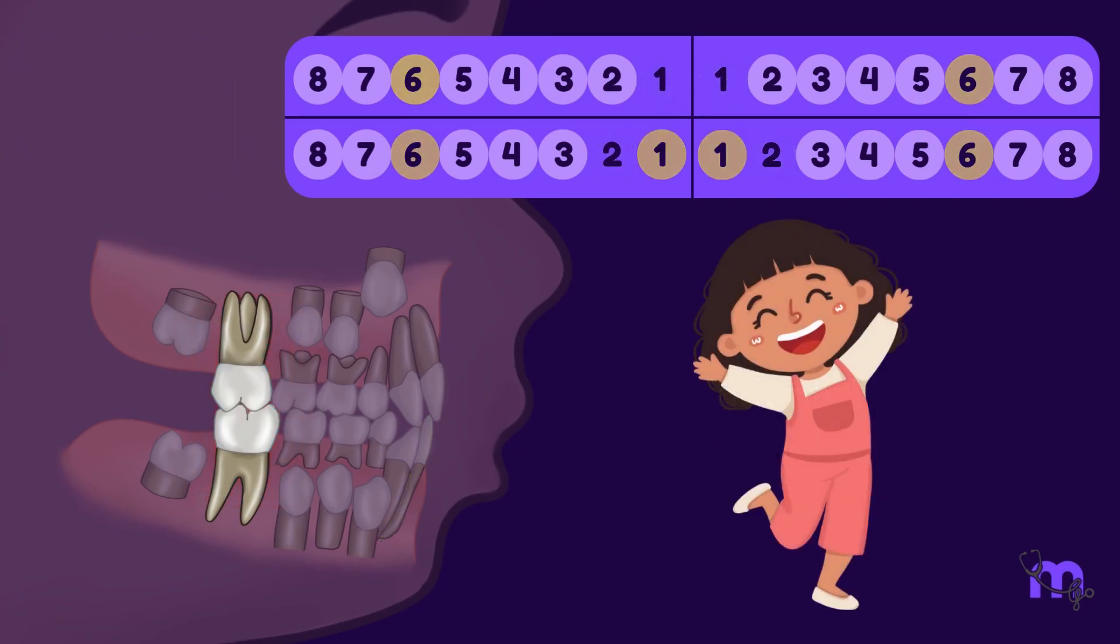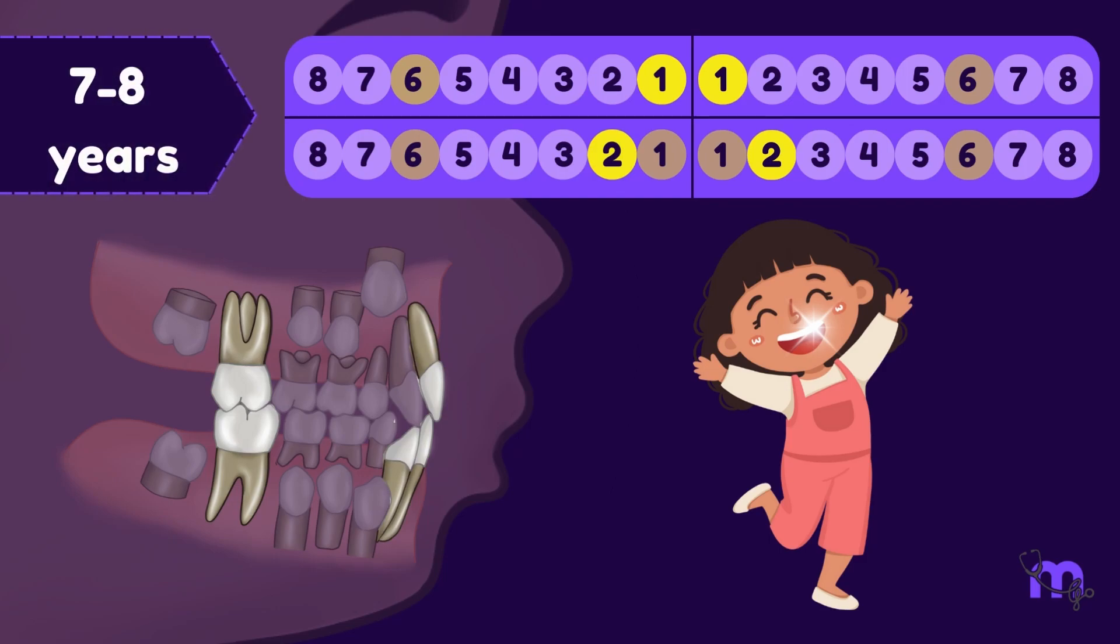Following this trio, a duo emerges that defines the aesthetic charm of the smile: the maxillary central incisors and the mandibular laterals. Their appearance at 7-8 years coincides with the blooming phase of the child's personality.